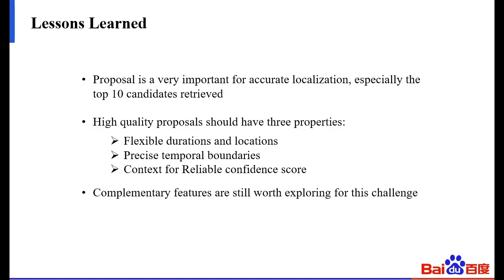For the challenge, we learn lessons in three aspects. First, proposal quality is very important for accurate localization, especially the top 10 candidates retrieved. Second, high-quality proposals should have three priorities: flexible durations and locations, precise temporal boundaries, and context for reliable confidence score. Third, the complementary characteristics of different modalities are still worth exploring for this challenge.